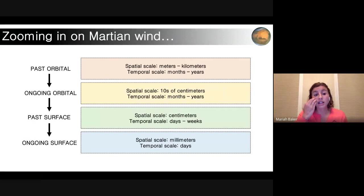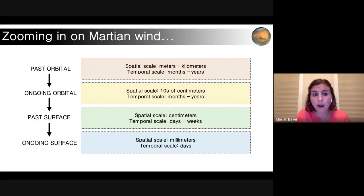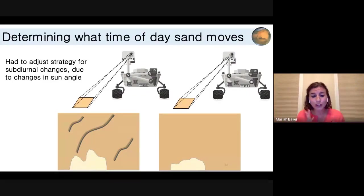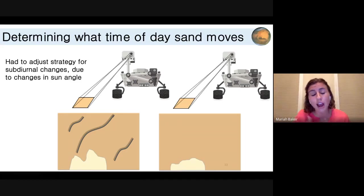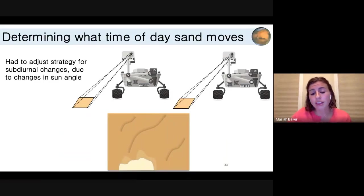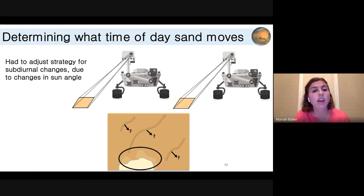We've now gotten to our ongoing surface missions, which have brought us down to looking at things changing on the scale of millimeters per day. But can we do better? Can we increase our resolution even more? Yes, it took a little creativity. If we take multiple images in one day, we can no longer track those ripples because tracking ripples requires a constant illumination angle — the sun's illumination angle changes throughout the day. So instead, we track the movement of sand around bedrock regions. The sand on Mars is very dark and bedrock is often much lighter, so we can observe these changes regardless of the sun's illumination.